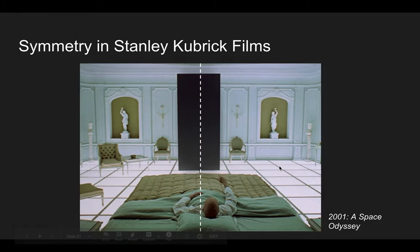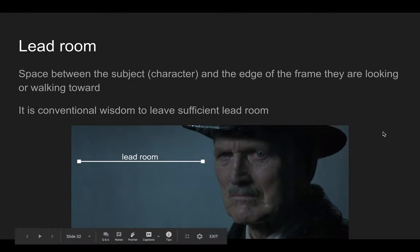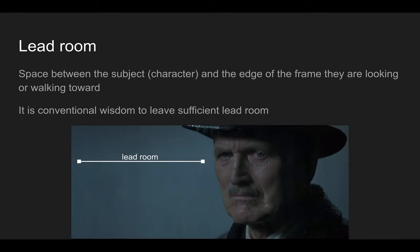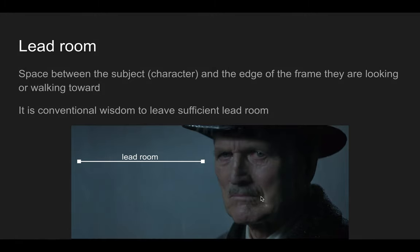The next term is lead room — like the rule of thirds, this indicates a shot that follows convention. Lead room is the space between a subject or character and the edge of the frame that they're looking at or walking towards. If you're shooting a character walking in a tracking shot, you'll probably have them on one side of the frame with space ahead to suggest they're heading towards something — enough space to move.